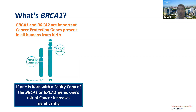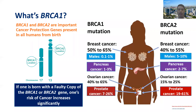If one is born with a faulty copy of the BRCA1 or BRCA2 gene, one's risk of cancer increases significantly. The average lifetime risk of breast cancer in a woman in the population is about 8 to 10%, but in a BRCA1 carrier this risk goes up to 65, and in some reports, 80%. Ovarian cancer affects less than 1% of the population, but if you are a mutation carrier this risk goes up to the 60s. Males are not spared — BRCA1 and BRCA2 do not discriminate. You can get male breast cancer, pancreas cancer, and a much more aggressive variant of prostate cancer.